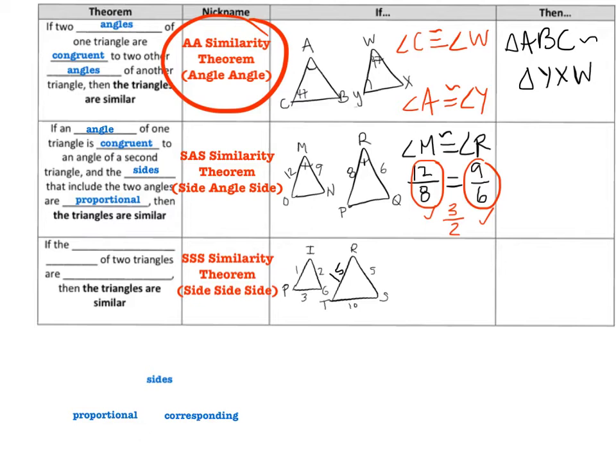Okay, so let's name those triangles. Triangle M, N, O. Let's find that order. I'm starting at the angle that's congruent, going to N, and then O. M, N corresponds to R, Q. So I'll go R, Q, P. Triangle R, Q, P.